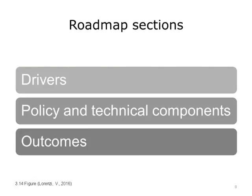Let's look at this journey and its sections. Imagine parallel roads on our journey to the learning health system. The roadmap is divided into three sections, or roads, each with goals and milestones. One set of roads is the drivers. A next set of roads is the policy and technical components. And the next set of roads is outcomes.